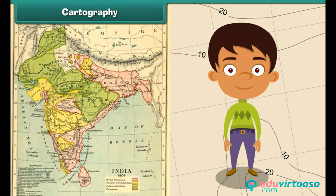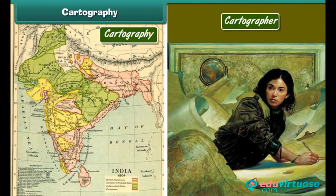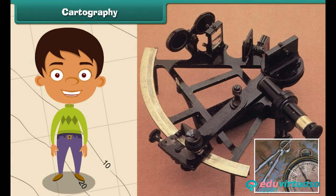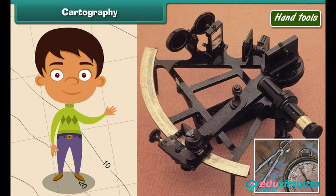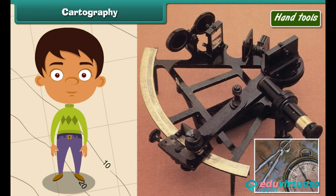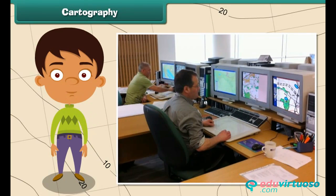Cartography is the science of drawing maps. The person who draws maps is known as a cartographer. In the olden days, maps were drawn using hand tools. Hand cartography was a time-consuming and difficult process, and maps drawn using hand tools were also inaccurate. But nowadays maps are drawn with the help of computer software, hence they are more accurate.